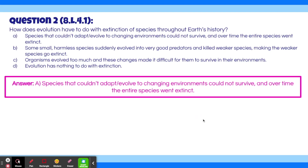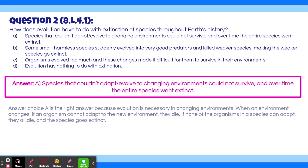The answer is A. Species that couldn't adapt or evolve to changing environments could not survive, and over time the entire species went extinct. Answer choice A is correct because evolution is necessary in changing environments. When an environment changes, if an organism cannot adapt to the new environment, they die. If none of the organisms in a species can adapt, they all die and the species goes extinct.